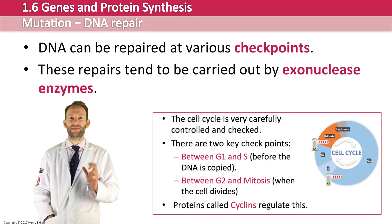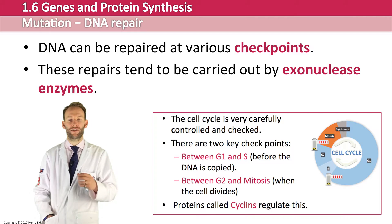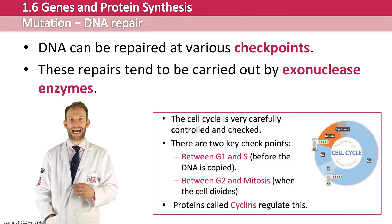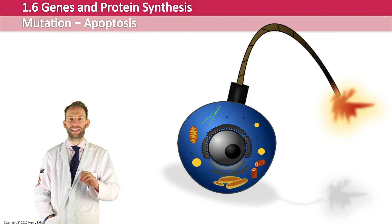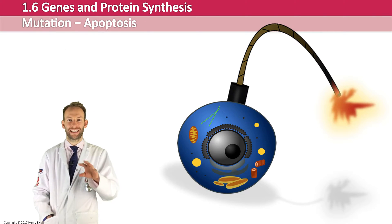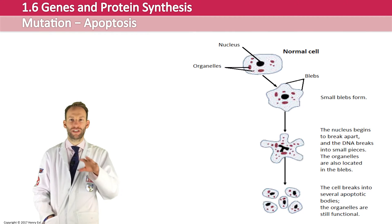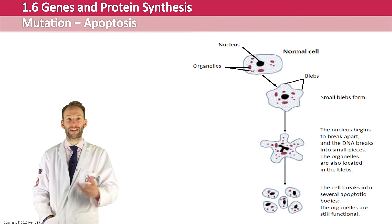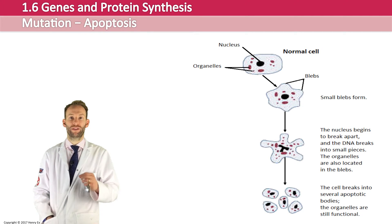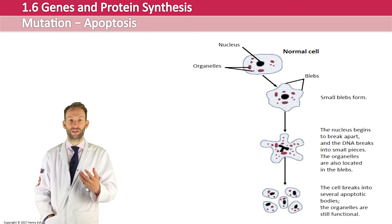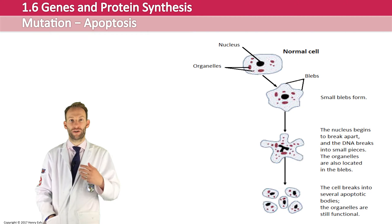Sometimes DNA damage can accumulate or be so serious that the cell self-destructs — and this is called apoptosis. The cell forms blebs as it goes through this process; these little bits of cytoplasm start coming off, it starts breaking apart, and the fragments end up getting ingested by phagocytes. Apoptosis is a very important process because it can stop a cell becoming cancerous — it's important for cells to be able to do this.